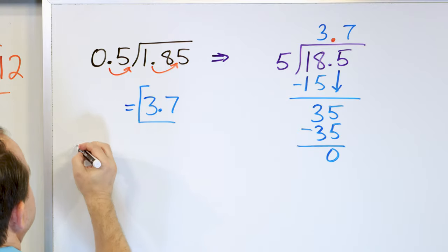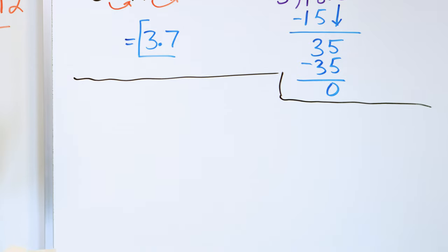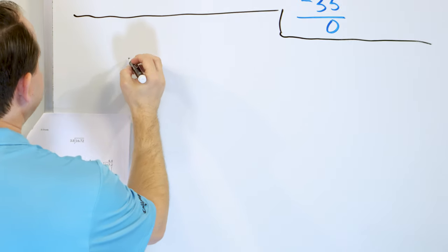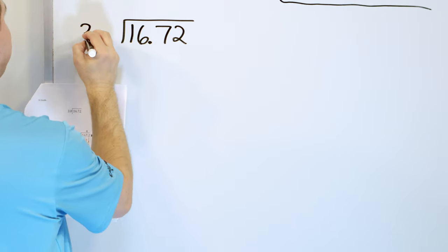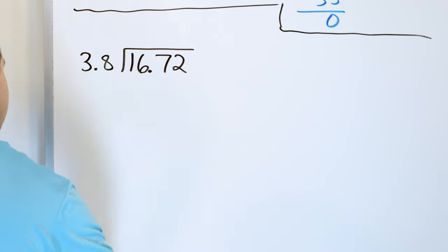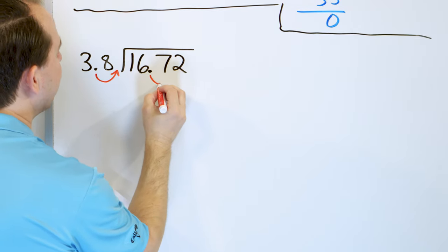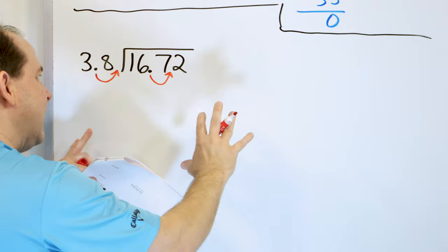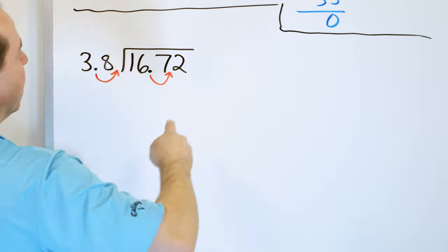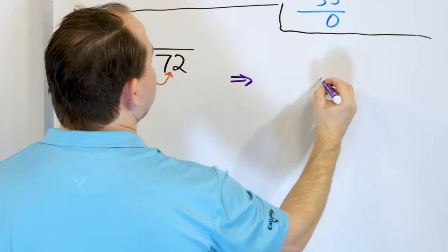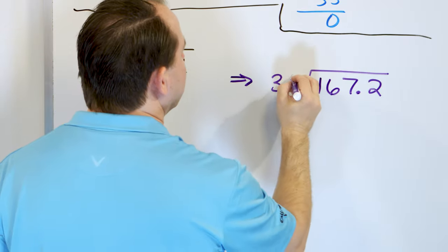Alright, I know it's a little weird in the beginning, but I promise it will become clearer as we work more problems. We're going to move that decimal point every single time on the outside. Let's take the next problem: let's say we want to divide 16.72 by 3.8. The very first step is to look on the outside — we have a decimal point there, we do not want decimals on the outside, we want whole numbers. We move one position there, therefore we must move one position here.